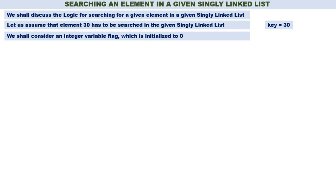We shall consider an integer variable flag which is initialized to 0. This flag concept is important. When flag is equal to 0, it means the element is not yet found. Whenever we find the element, we make flag equal to 1. So flag will tell us whether the element is found or not. Flag equal to 0 means the element is not yet found; flag equal to 1 means the element is found.